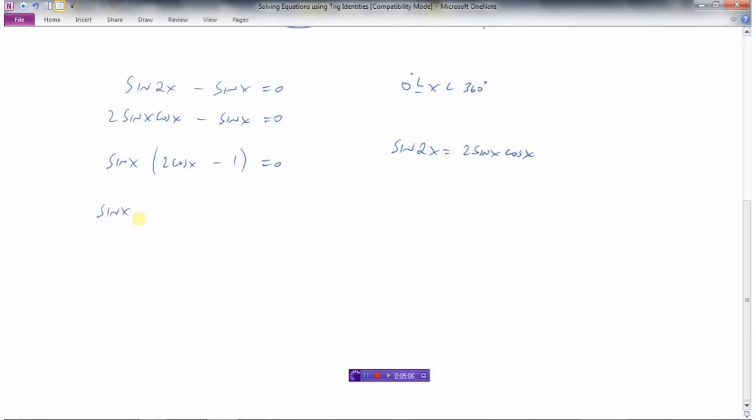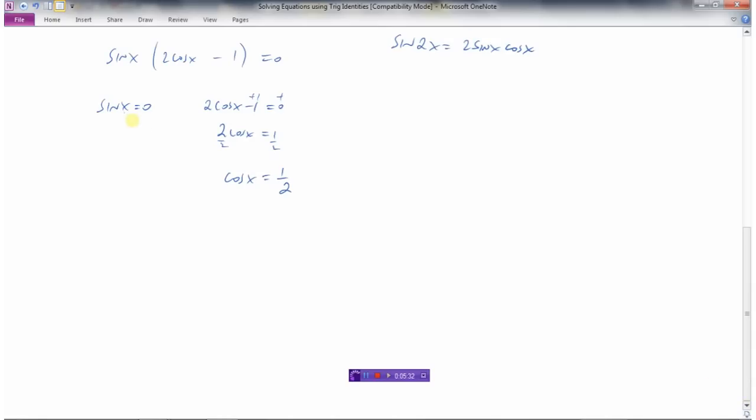So I can say the first term needs to equal 0 or the second term needs to equal 0. This first one's already isolated for me. This one here, I need to add 1 to both sides, and then divide by 2 to isolate cos x. So I've got two equations to solve here: sin x = 0 and cos x = 1/2.